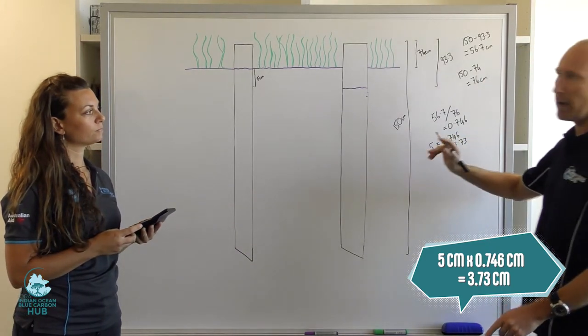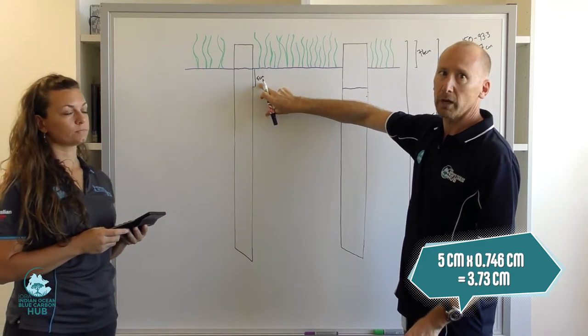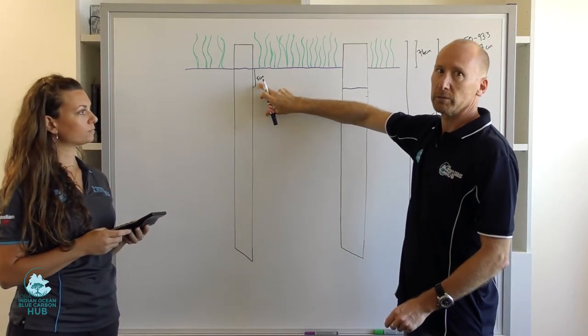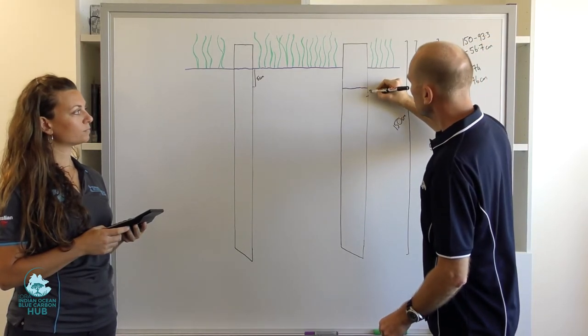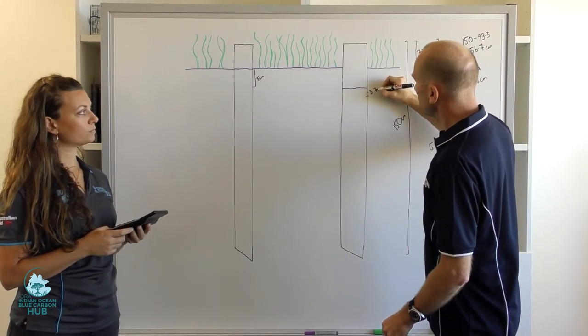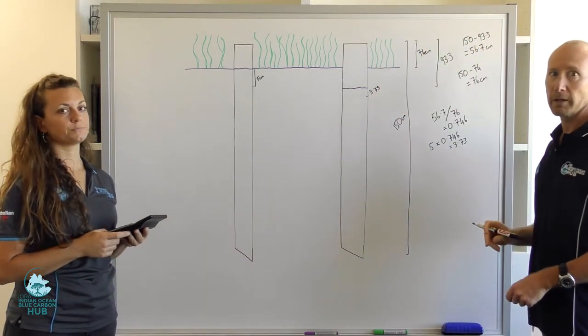So in the lab, if we wanted to get the equivalent to an uncompressed 5 centimeter slice of our core, we would want to take a 3.73 centimeter slice.